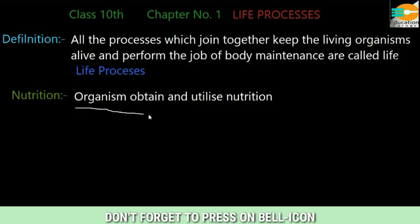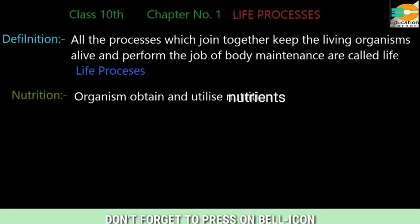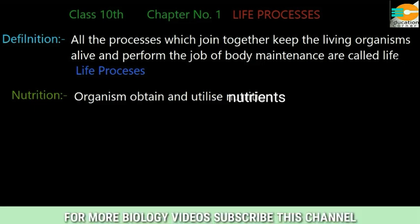We have to discuss all these processes in detail. First I will tell you a little bit about nutrition. When organisms obtain and utilize nutrients, that process is called nutrition. Obtaining nutrients and utilizing them — using them in our body — is called nutrition. Until nutrients are actually used in our body, whatever we eat is wasted.